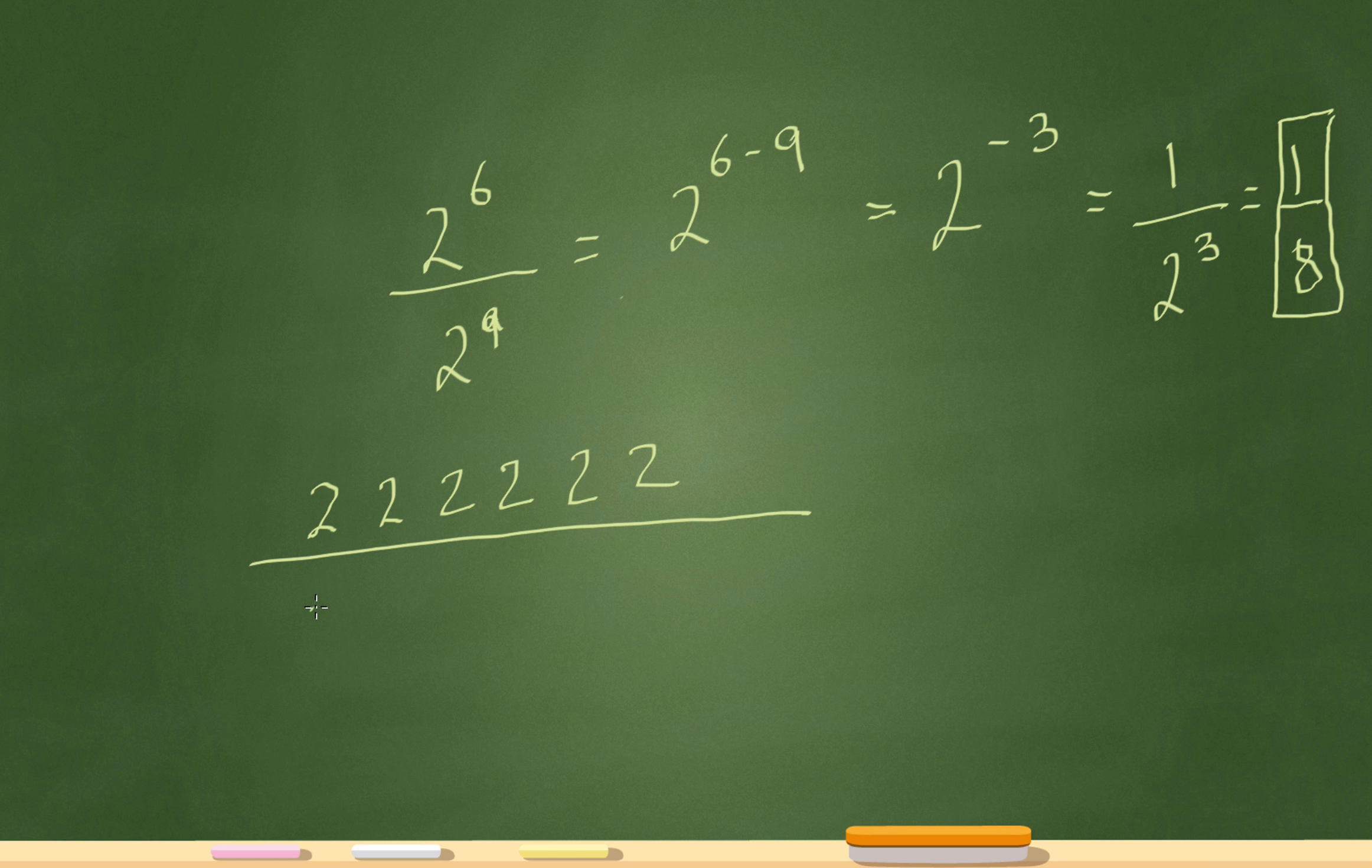And at the bottom I have 9 2's. 1, 2, 3, 4, 5, 6, 7, 8, 9. Right? That's what 2 to the 9th is.